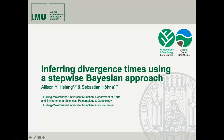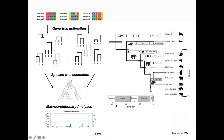Thank you everyone for being here to listen to my talk. Today I'm going to talk about using a stepwise Bayesian approach to infer divergence times. As we just saw in the very interesting talk that Tracy gave, as phylogeneticists we're often not only interested in inferring the tree topologies of the organisms of interest, we also are interested in when these branching events actually happened in time.